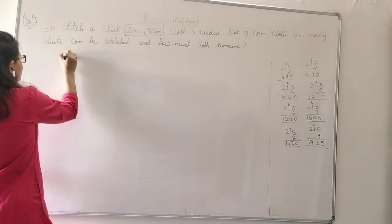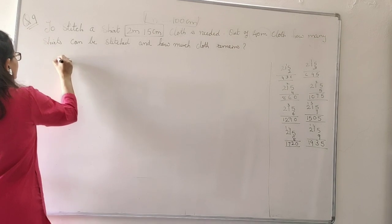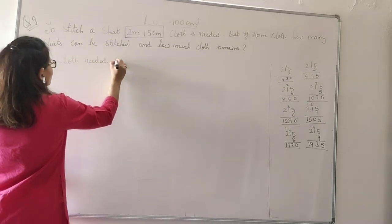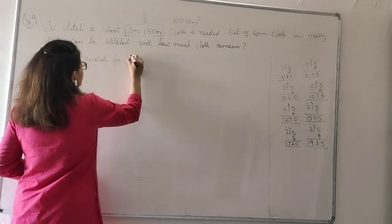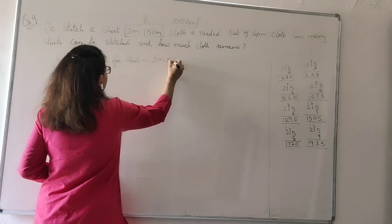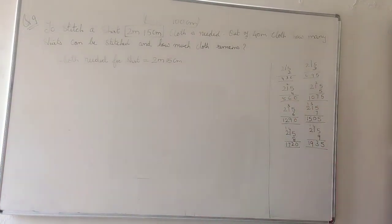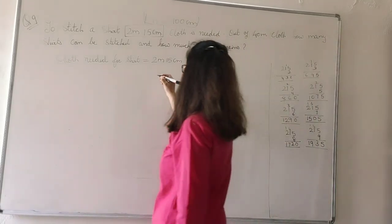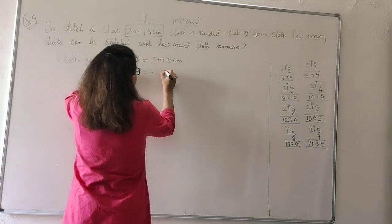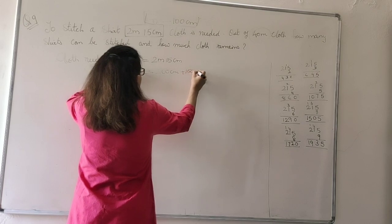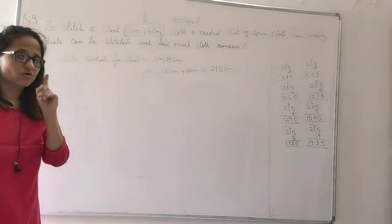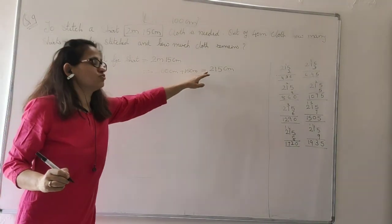So, cloth needed for shirt. This is 2 meters 15 centimeters. Now 2 meters 15 centimeters cloth means, 1 meter is 100 centimeters. So, 2 meters will be 200 centimeters plus 15 centimeters. This will be 215 centimeters cloth. So, for one shirt, how much cloth is needed? 215 centimeters.